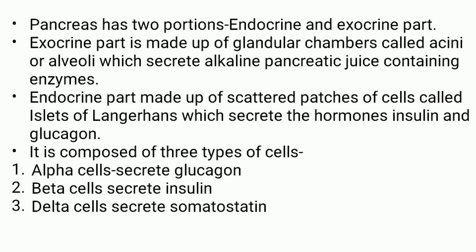The pancreas has two portions: the endocrine and the exocrine part. The exocrine part is made up of glandular chambers called acini or alveoli, which secrete the alkaline pancreatic juice containing enzymes. The endocrine part is made up of scattered patches of cells called the islets of Langerhans, which secrete the hormones insulin and glucagon. These islets are composed of three important cell types: alpha cells, which secrete glucagon; beta cells, which secrete insulin; and delta cells, which secrete somatostatin.